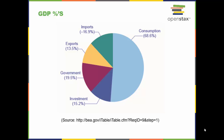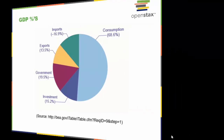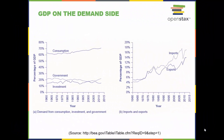Consumption makes up over half of the demand-side components of GDP, as we can see in this graph. Consumption is about two-thirds of GDP but moves relatively little over time. Business investment hovers around 15 percent of GDP but increases and declines more than consumption. Government spending on goods and services is about 20 percent of GDP. Exports are added to total demand while imports are subtracted. If exports exceed imports, as in most of the 1960s and 70s, the U.S. economy is in a trade surplus. If imports exceed exports, as in recent years, a trade deficit exists.